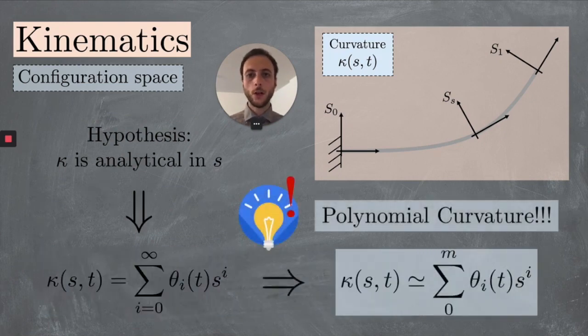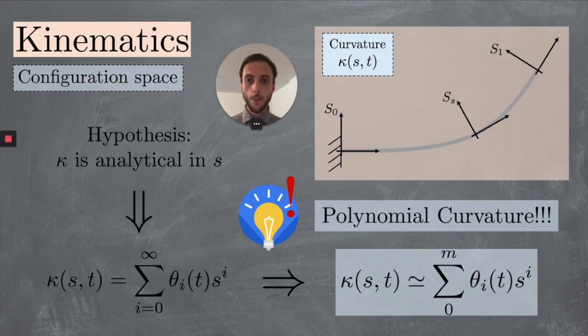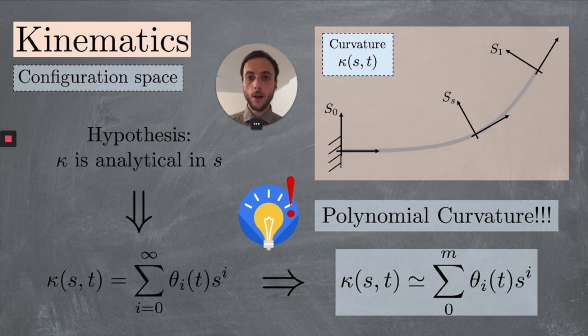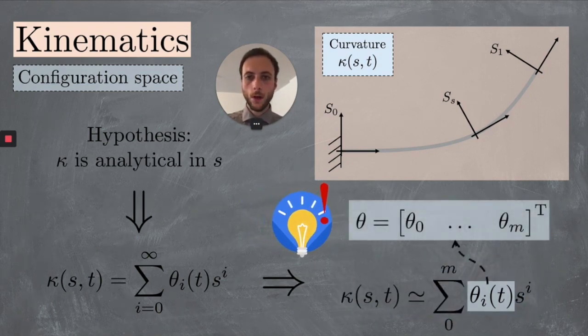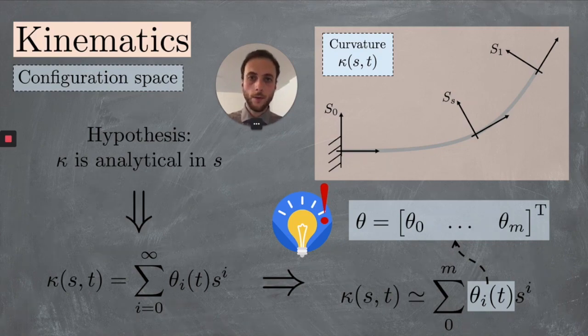This, in turn, induces a quite straightforward way of approximating kappa as a polynomial in S of order n with m as big as we want. We can now take theta to be the configuration of our robot, and it's now something that stays in a space which has dimension m plus 1 rather than infinity.